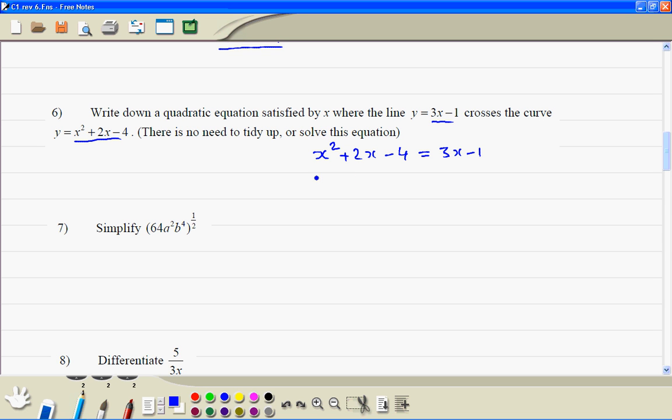Now bring everything to the left hand side. x squared, then 2x minus 3x is going to be minus 1x, minus 4 plus 1, this will be minus 3, and is equal to 0. That's it.